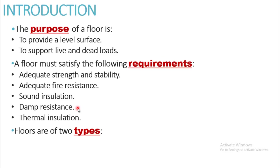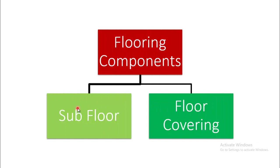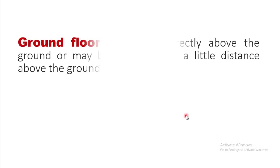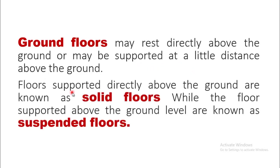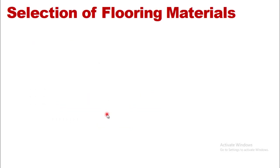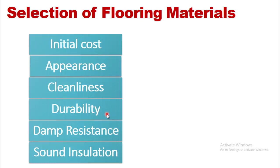There are two main types of floors: ground floor and upper floors. Flooring components include subfloor and floor coverings. The ground floor may rest directly above the ground or be supported at a little distance above it. Floors supported directly on the ground are known as solid floors, while floors supported above ground level are known as suspended floors.